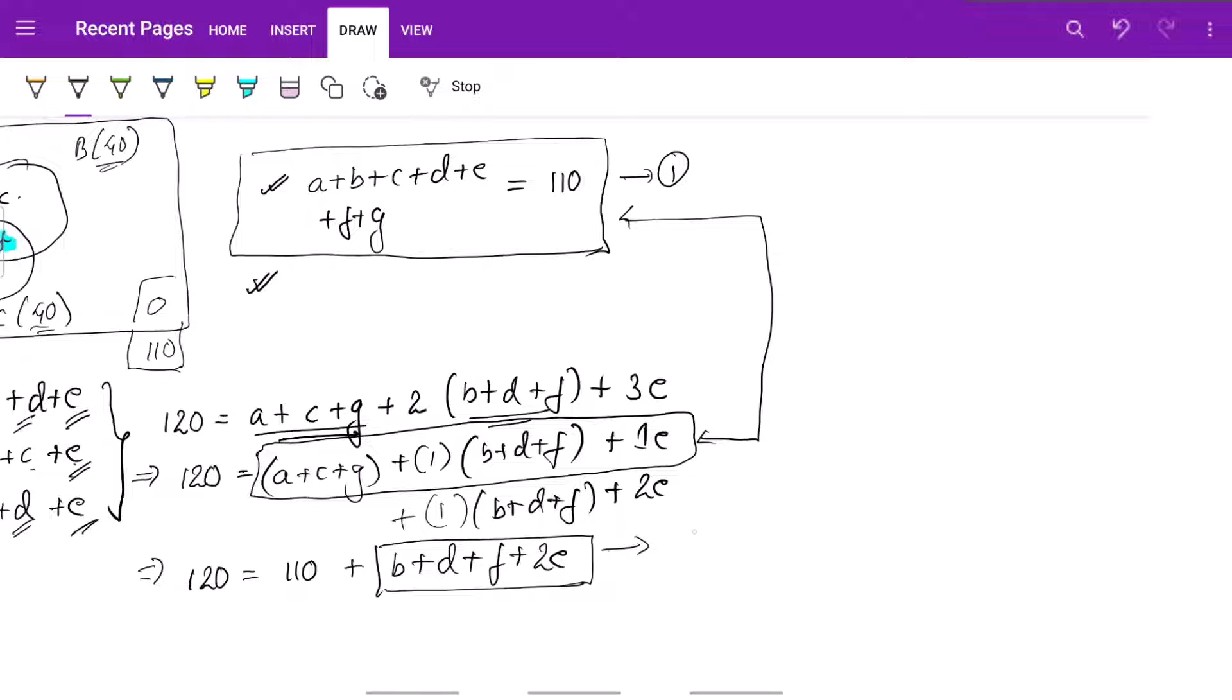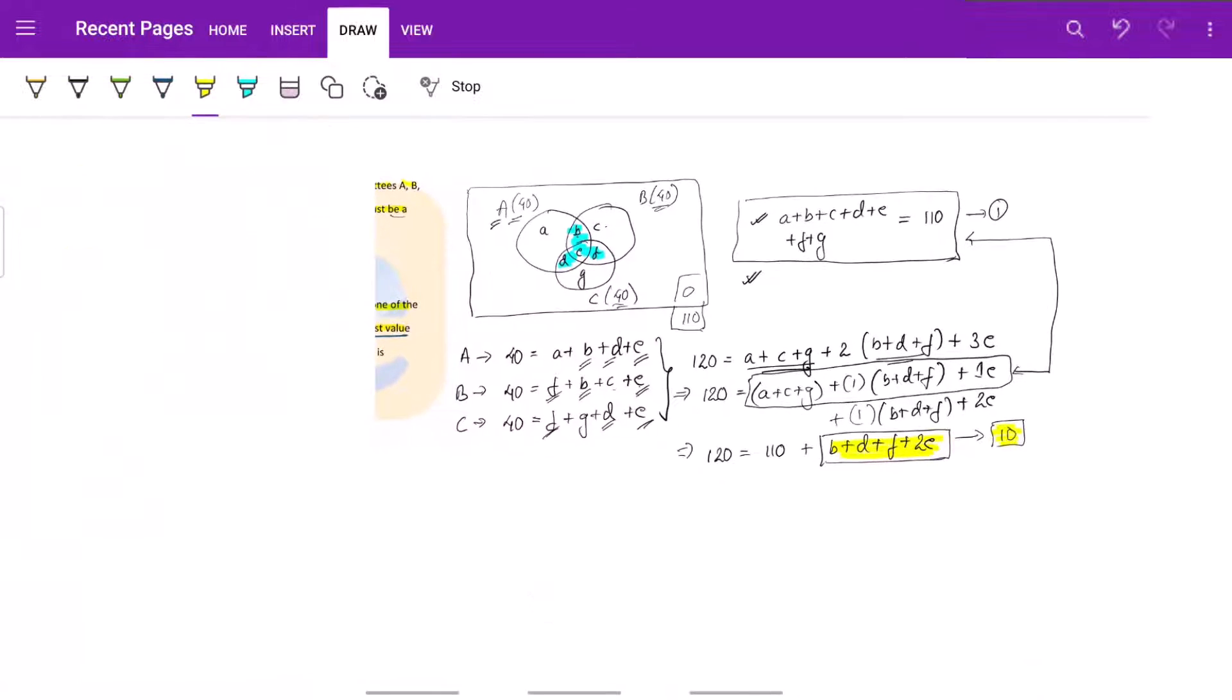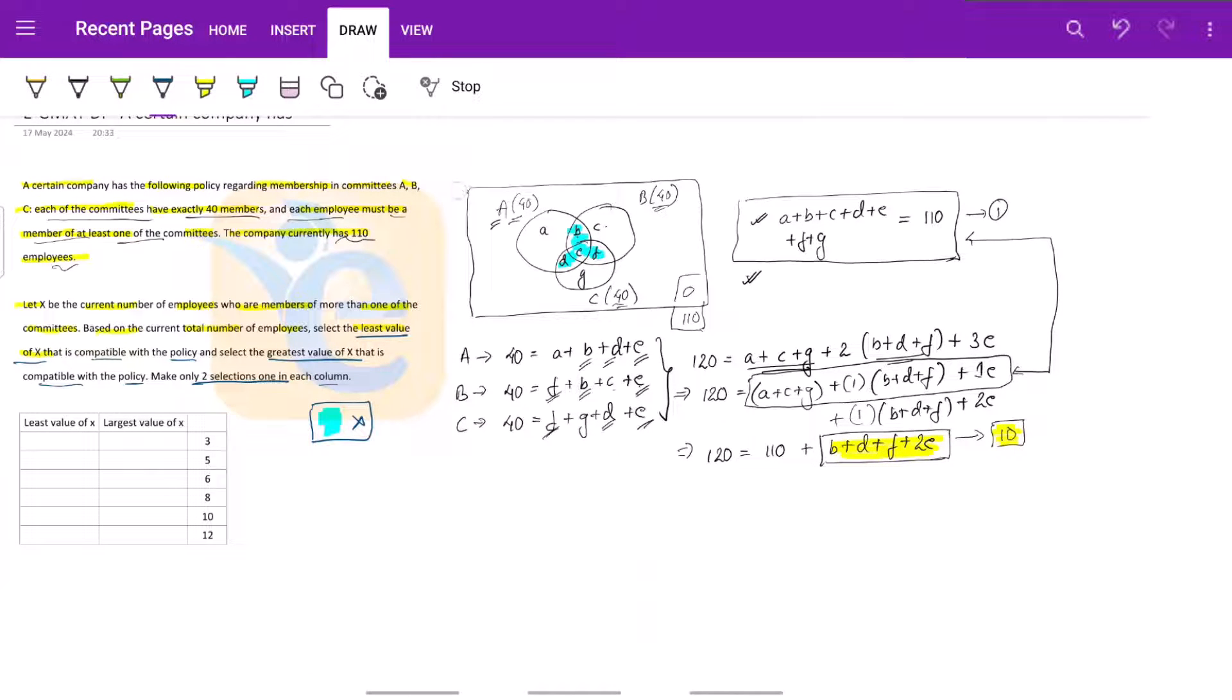So essentially we have 120 equals 110 plus b plus d plus f plus 2 times e. So this value comes out to be 10. So I hope you are following till this point of time. Let us quickly see what have we done. As a step one, we formulated our Venn diagram, we wrote our first three equation here, did a sum, then we wrote our basic Venn diagram equation and we have reached till this point.